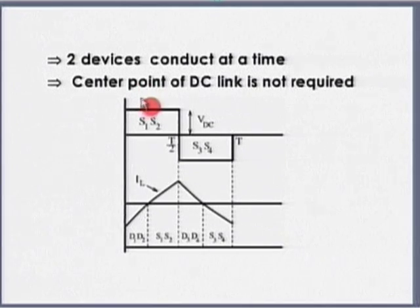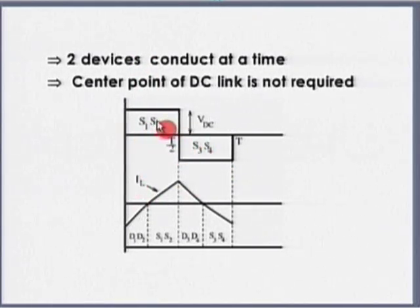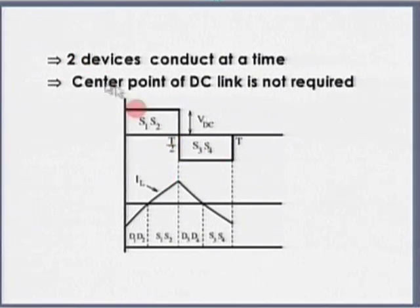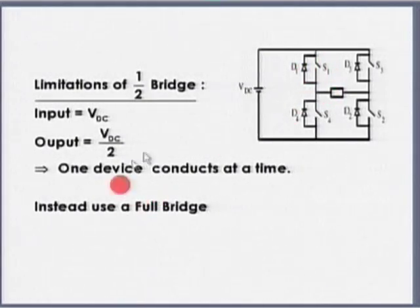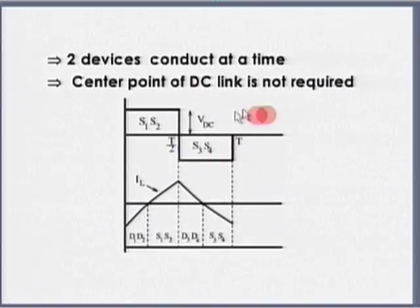If you require a sinusoidal supply with harmonic content as low as possible, I need to do something else. I just cannot allow the device to conduct for 180 degrees — each device is conducting for 180 degrees. Having turned on S1 and S2, they remain on for 180 degrees. The limitation here is: it has all odd harmonics. Now, single phase we discussed. Let us see a three-phase inverter.